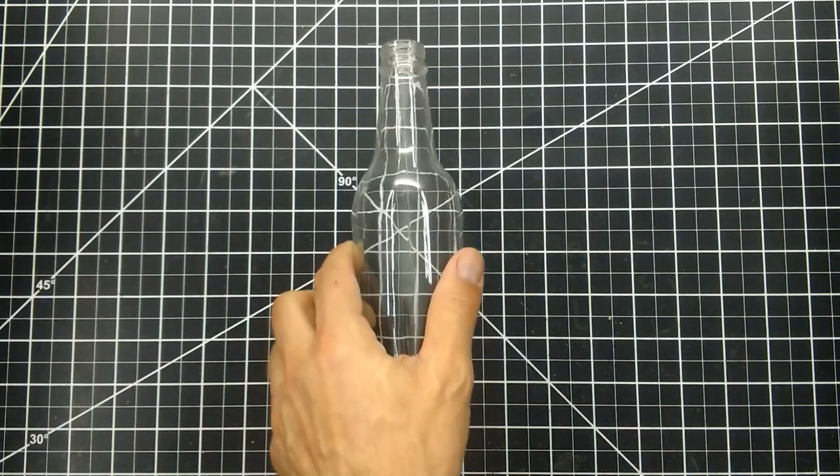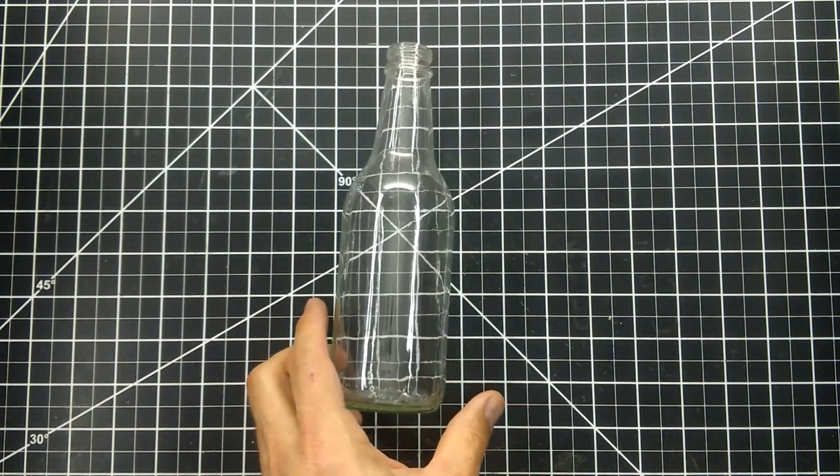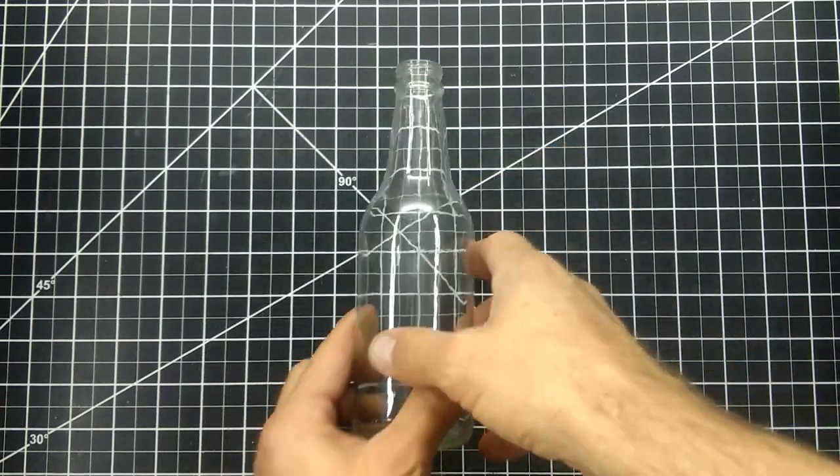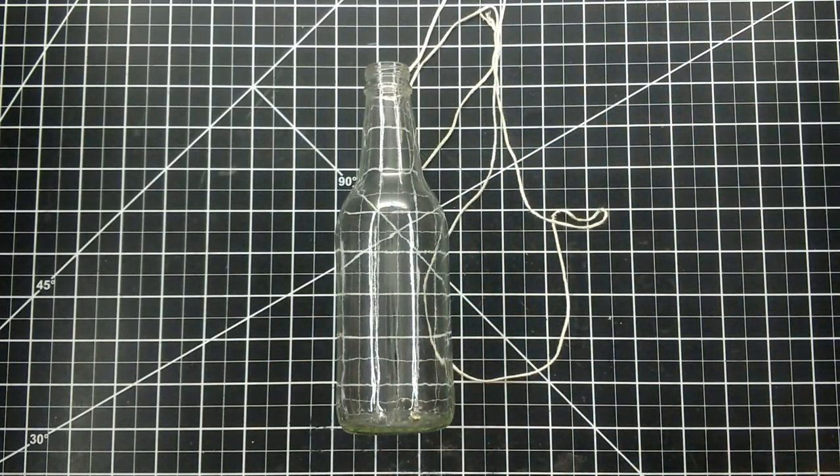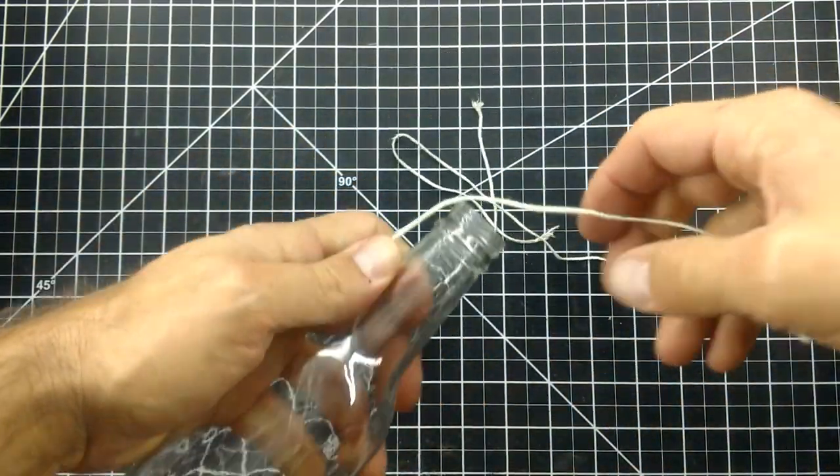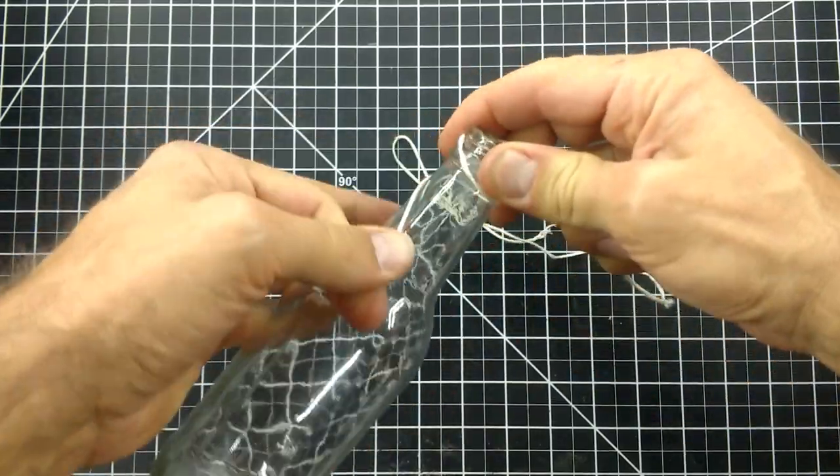Not all bottles have a twist off cap though. With this bottle, I'm going to show you how to use this ridge near the top of the bottle to hang it with string. Wrap the string around the neck of the bottle twice, keeping the loops loose.